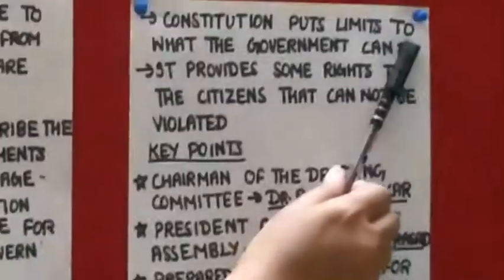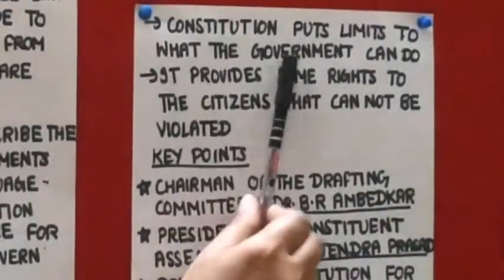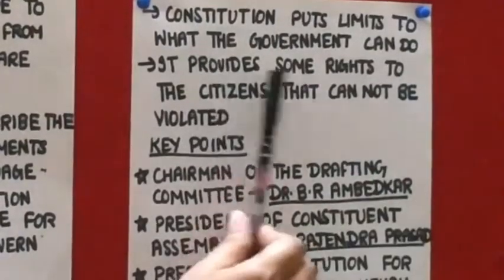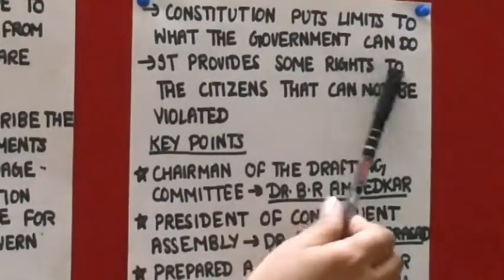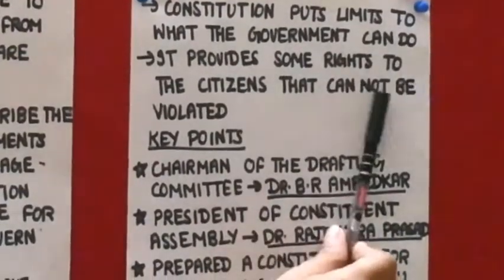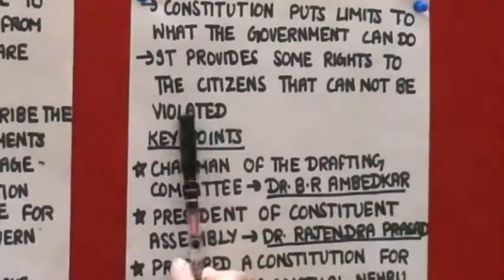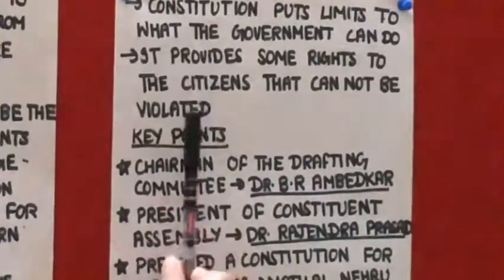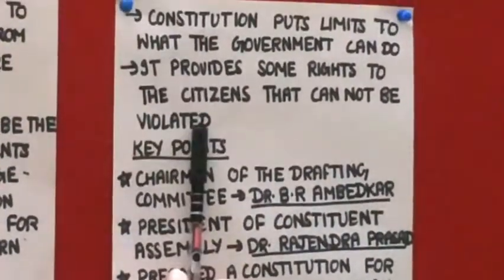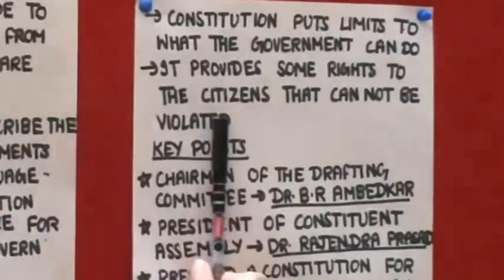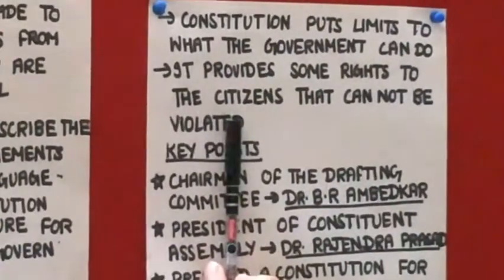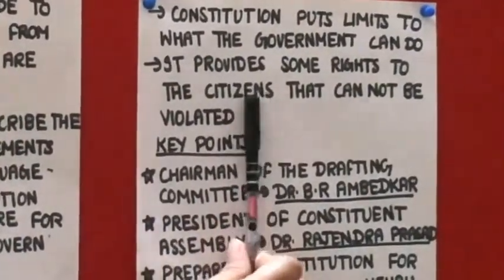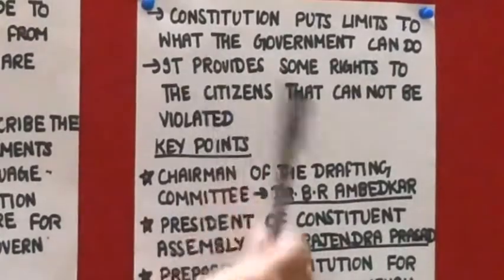The constitution puts limits on what the government can do. It provides certain rights to citizens that cannot be violated — our fundamental rights. These cannot be violated, and all our fundamental rights are protected by the right to constitutional remedies.